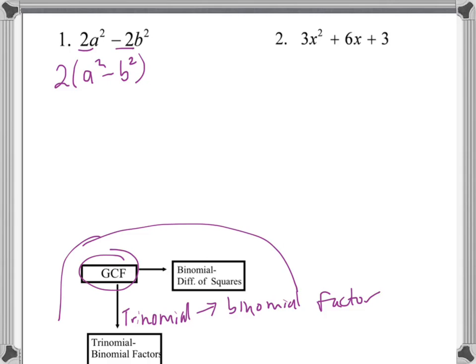Well, a² minus b² is a binomial and it is the difference of squares, so that can be factored further into the product of the sum and difference of two terms. So we have the 2 out front, and then we break this down into two more factors: a plus b times a minus b.